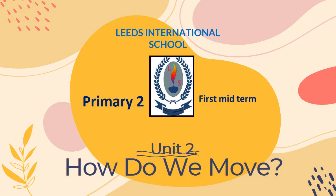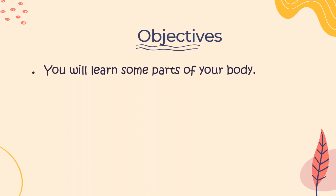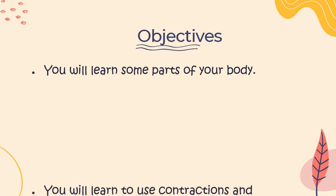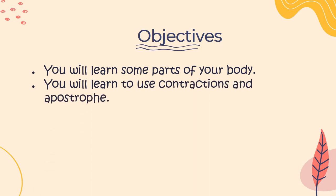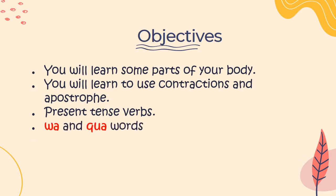Primary 2 First Midterm, Unit 2: How do we move? The objectives of this lesson are to learn some parts of your body, how to use contractions and apostrophes, present tense words, and also 'wa', 'wo', and 'qu' words.